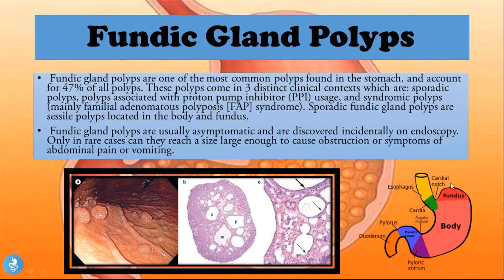The sporadic fundic gland polyps are sessile and located in the body or the fundus of the stomach — hence the name. Fundic gland polyps are usually asymptomatic and discovered incidentally on endoscopy. Only in rare cases can they reach a size large enough to cause obstruction or symptoms of abdominal pain or vomiting. They are benign and do not cause many symptoms.